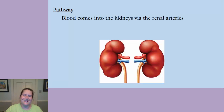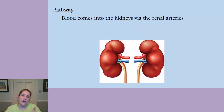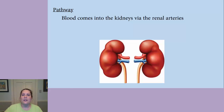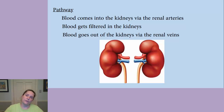Blood comes into the kidneys via the renal arteries. Anytime you see 'renal,' it refers to kidneys. They're arteries because they go away from the heart — specifically, renal arteries go away from the heart but into the kidneys. The blood gets filtered in the kidneys, and then it goes out of the kidneys via the renal veins. So: in through the renal arteries, filtered, out through the renal veins.